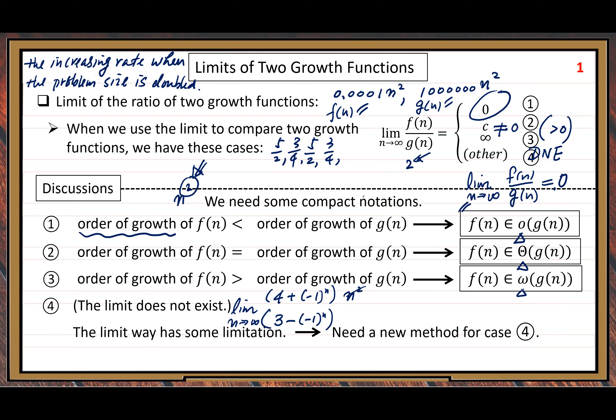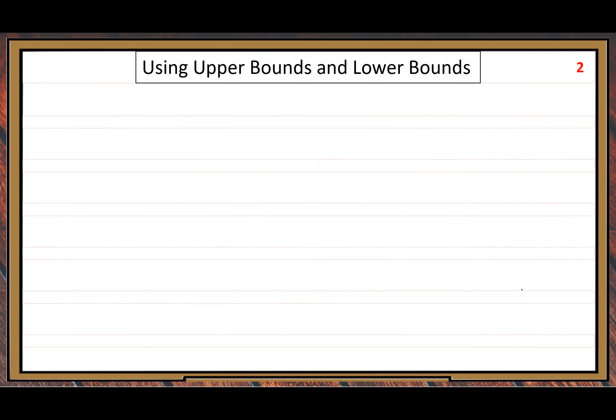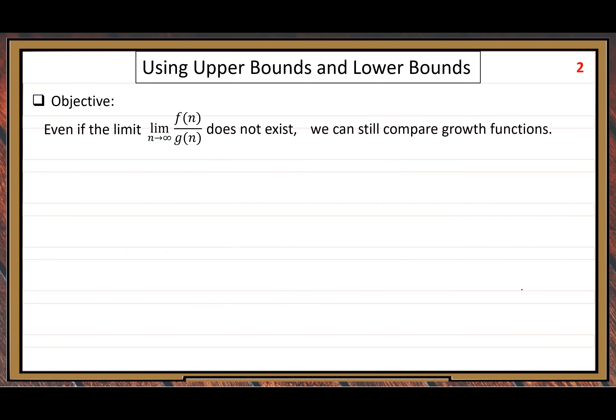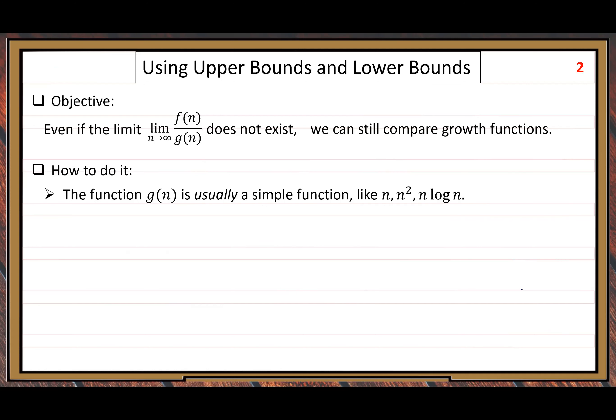In our next slide, let's look at a new method using upper bounds and lower bounds to study case number four. The objective is: we assume the limit of f(n)/g(n) as n goes to infinity does not exist, but we still want to compare these two growth functions in some special way.